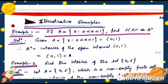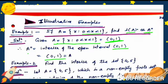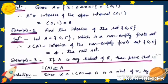Illustrative Example 1: If A = {x : 0 < x < 1}, find the interior of A (i.e., A°). Given A = {x : 0 < x < 1} = (0, 1), the open interval. The interior of the open interval (0, 1) is (0, 1) itself, so A° = (0, 1) = A.